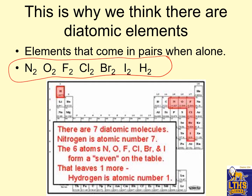Here are the seven diatomic elements. On the periodic table, starting at element number seven — nitrogen, oxygen, fluorine, chlorine, bromine, and iodine — they make a seven shape on the table. Plus hydrogen makes seven total diatomics. They spell a mnemonic: 'BrINClHOF' — or remember 'enough cool brief.' Diatomic means those elements are never by themselves; they're always with a buddy. So N2 means two nitrogen atoms bonded together, and H2 means two hydrogen atoms bonded together.